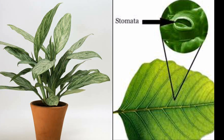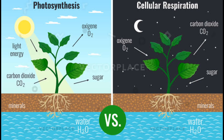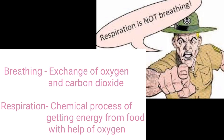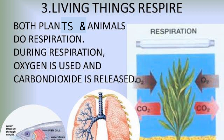Plants also have specialized organs for breathing called stomata. Stomata are the small pores present in the leaves which help in the exchange of gases. Like animals, plants also give out carbon dioxide during respiration. Remember there is a difference between breathing and respiration. Breathing means only the exchange of oxygen and carbon dioxide, whereas respiration means the process of getting energy from food with the help of oxygen. Non-leaving things do not respire.